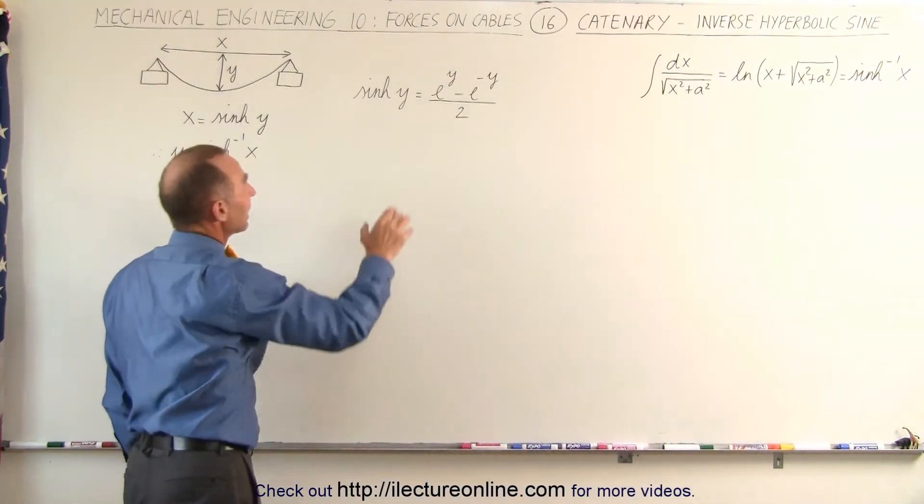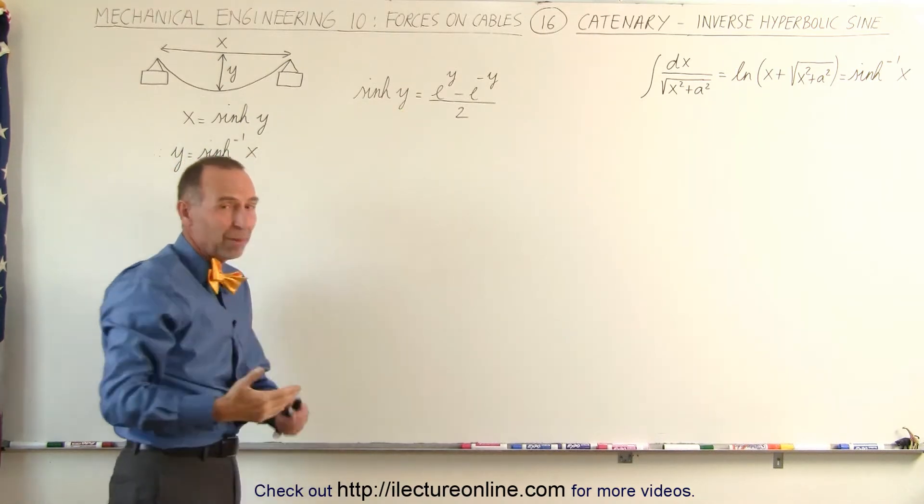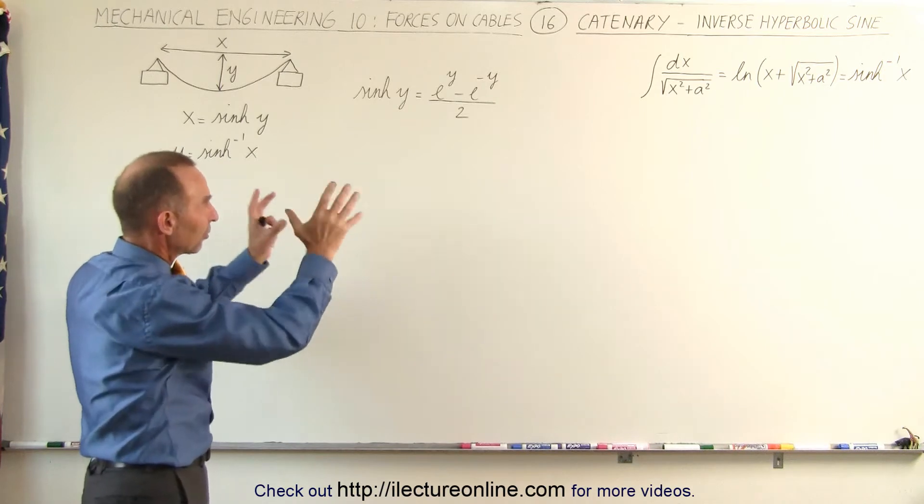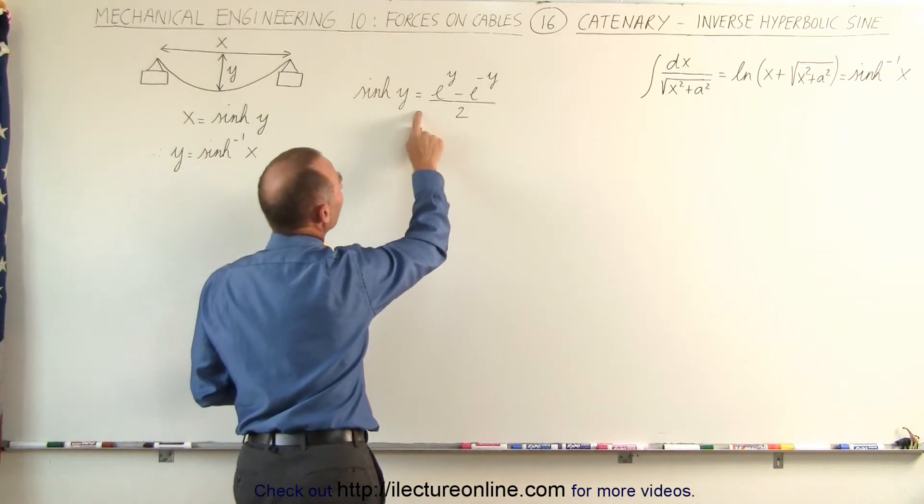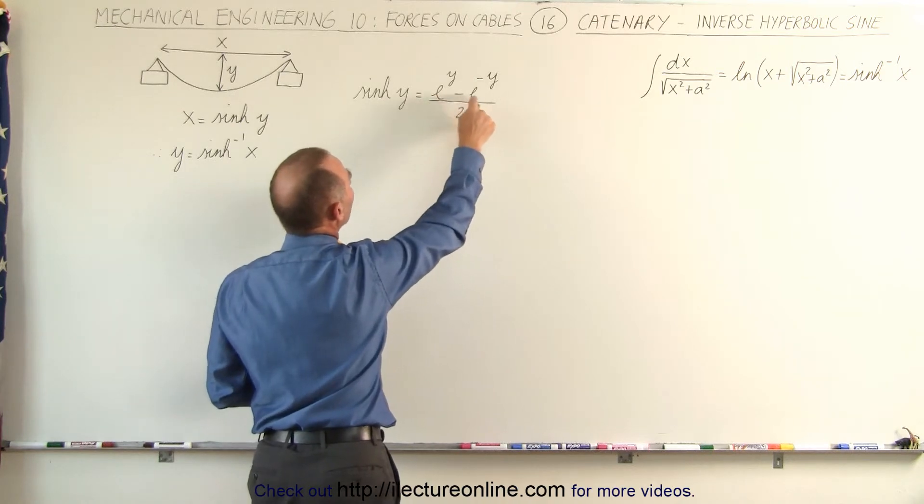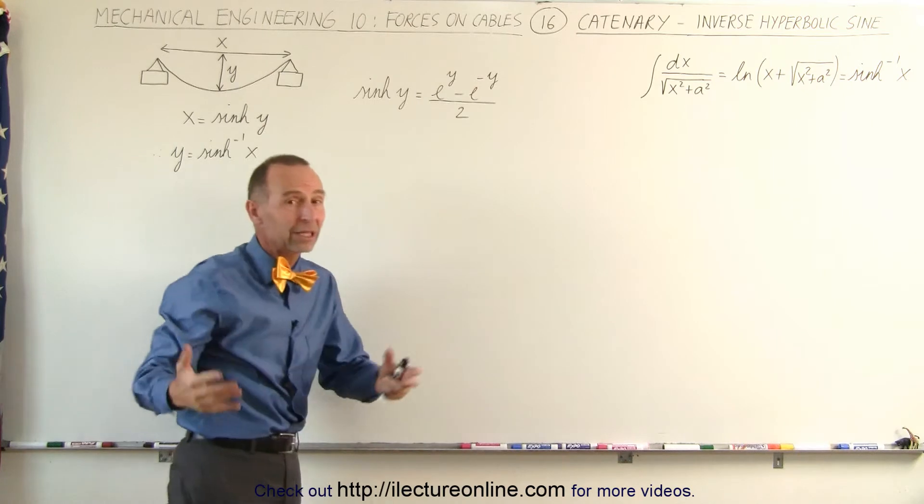Also, the equation, the hyperbolic sine of y, doesn't matter if it's x or y, but it works better for us. The hyperbolic sine of y is by definition e to the y minus e to the minus y divided by 2. Of course, x and y can be readily interchanged.